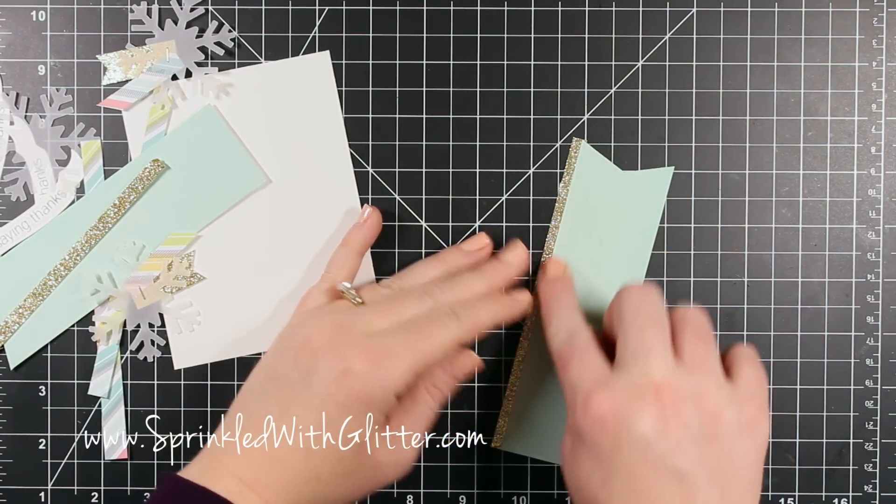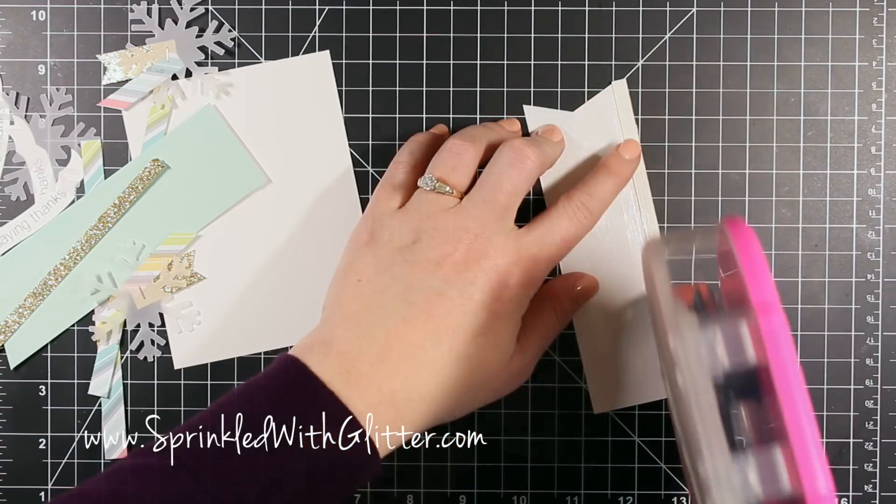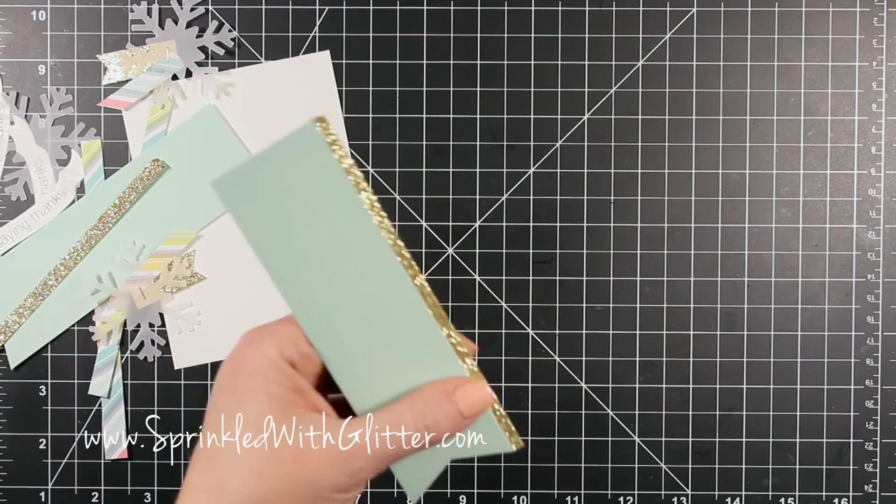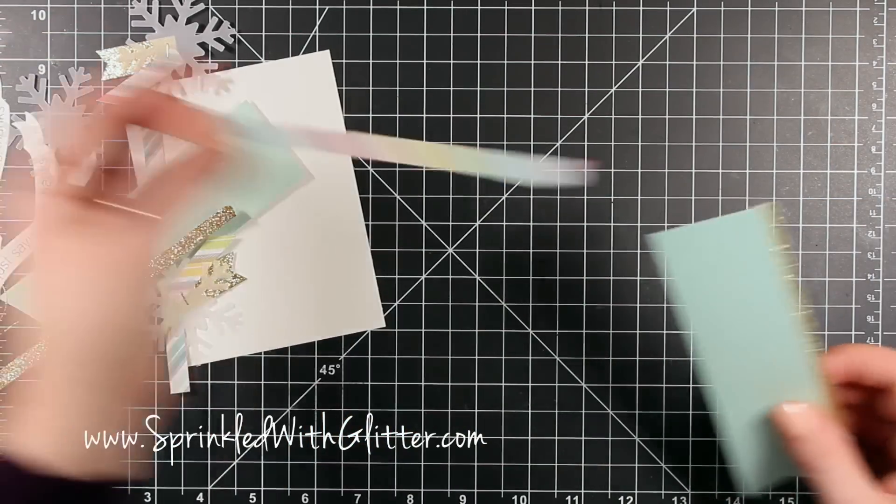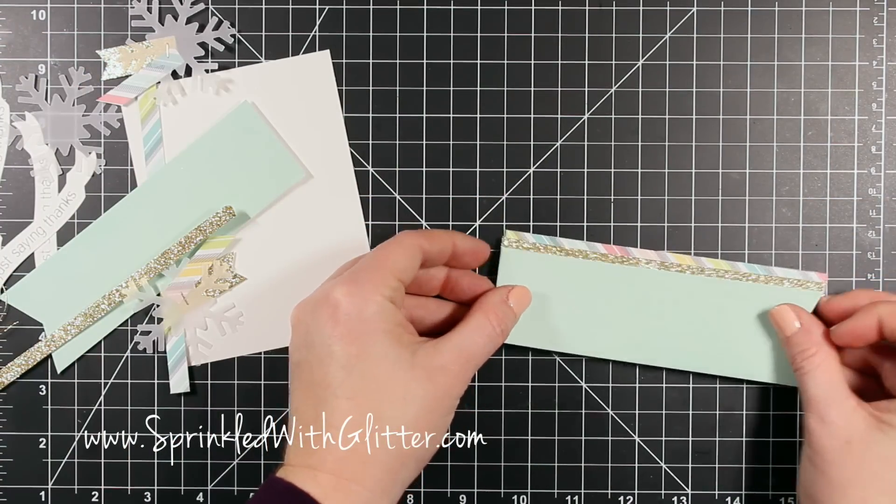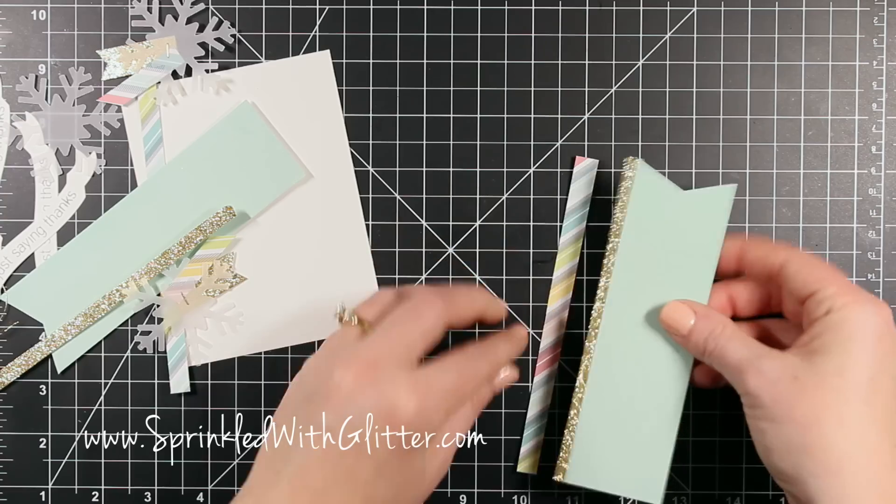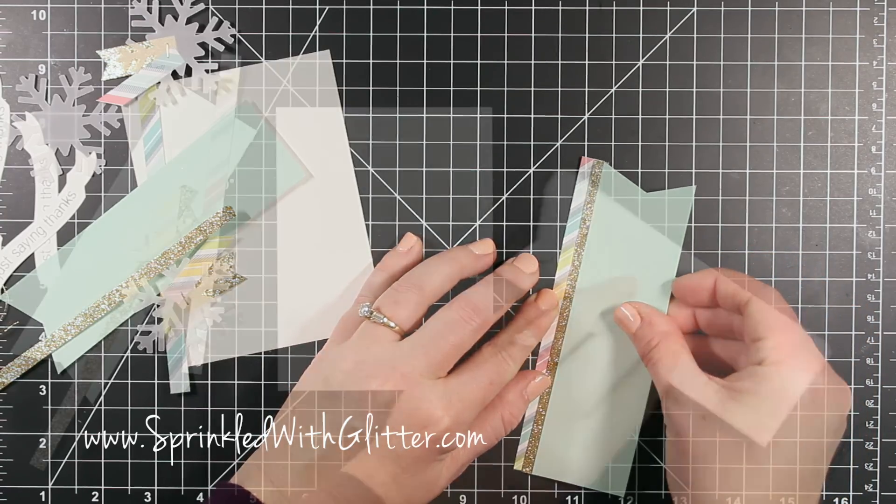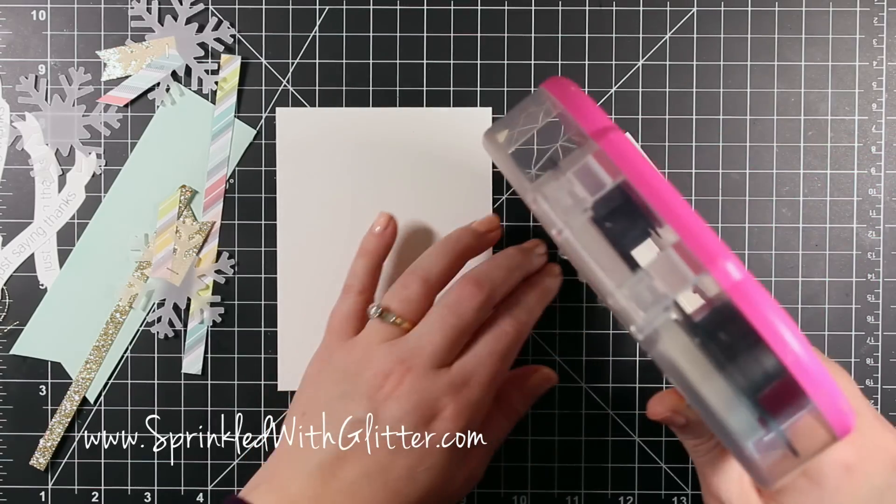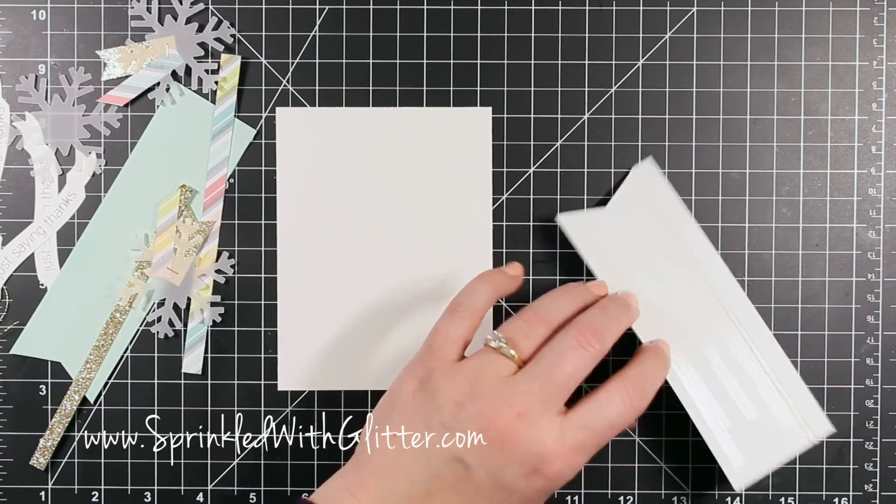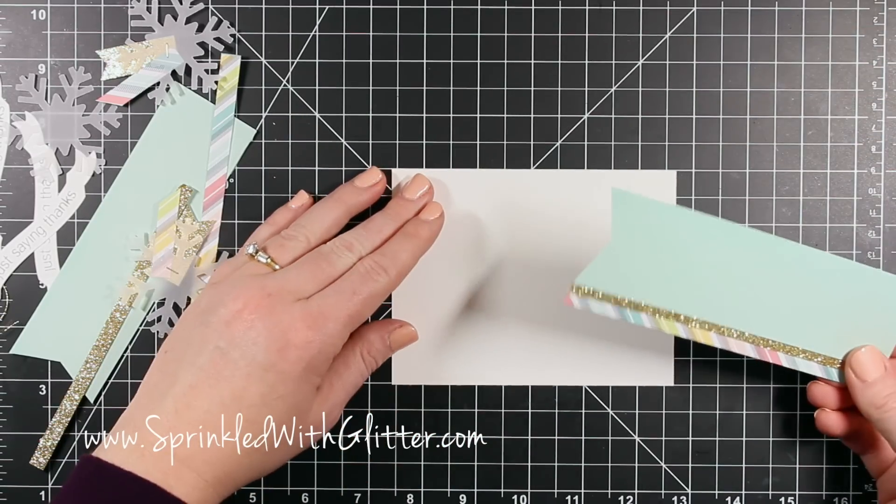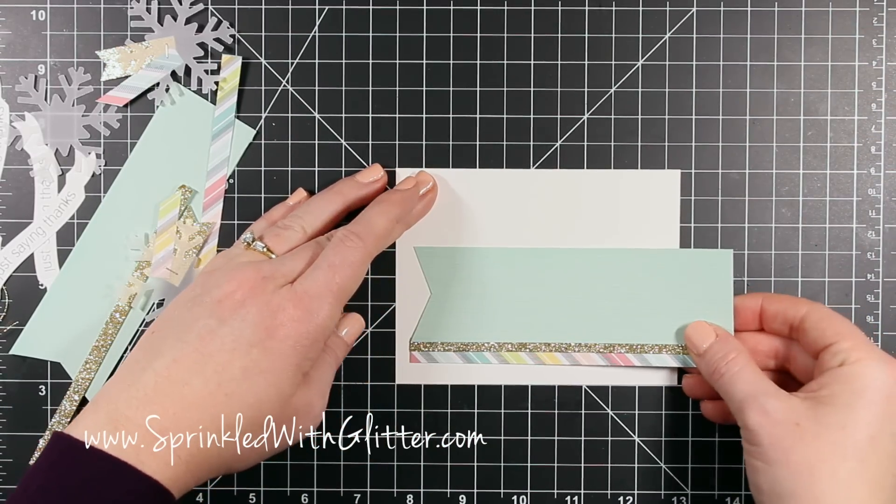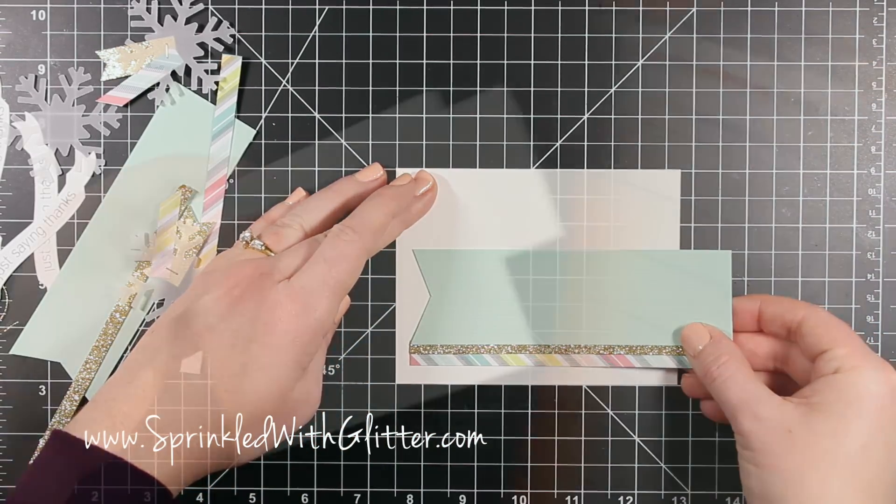Now I'm going to attach this gold glitter paper to this pattern paper. I just used a little tape runner adhesive for that. Then I'm going to attach the striped paper alongside of that as well. I like to add my tape runner adhesive and then work from the front so that I make sure that I get it really nice and even. Then I can take this whole piece and adhere it onto a card front. This is some Neenah Solar White, the 80-pound Neenah Solar White cardstock.